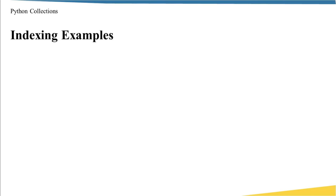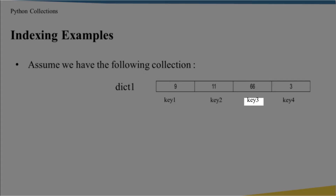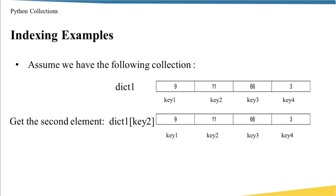Let's see one more example about indexing. In this case I'm going to show you a dictionary named dict_one. As you can see, there are no numbers, because I want to use a different index set. I choose key_one, key_two, key_three, key_four, and so on. In this case, there is no meaning for order — I cannot say 9 is the first item or 11 is the second item. But if I want to access the element 11, I say dict_one[key_two], and this gives me 11.